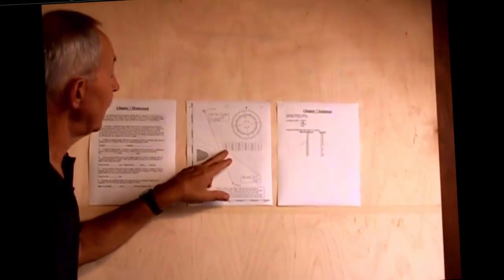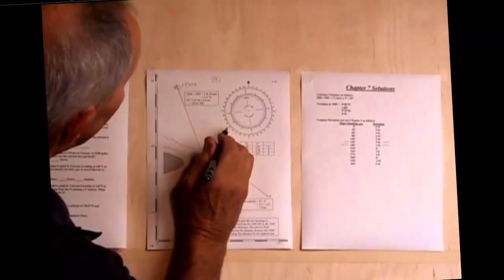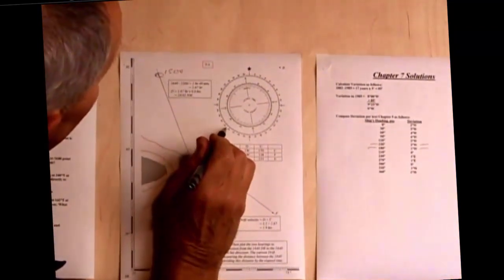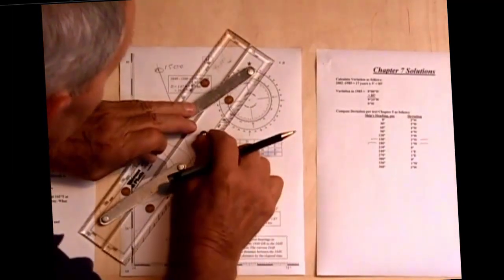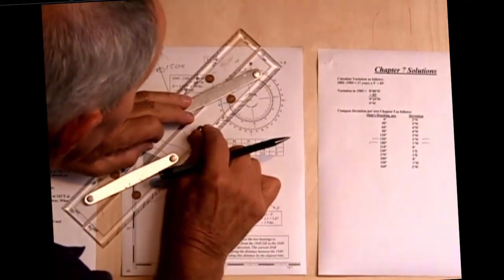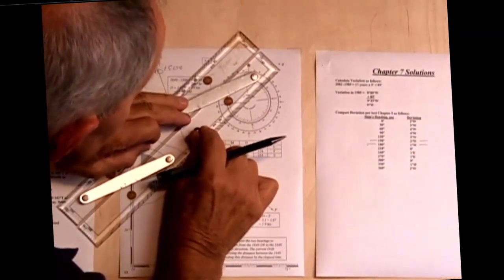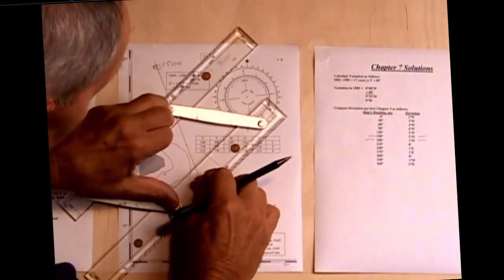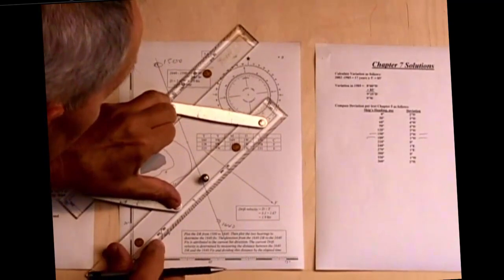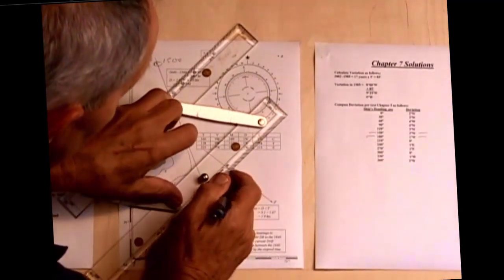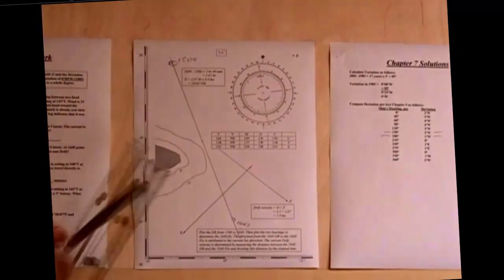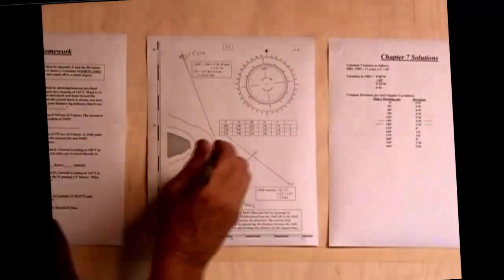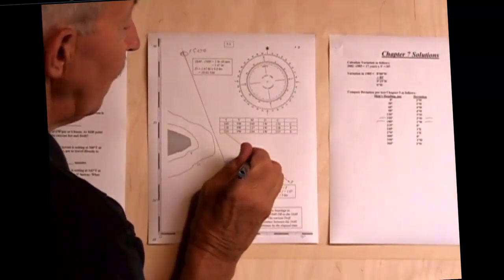The next bearing is 225 on point E. I come over here and find 225, which is right there. I put my parallel rules in, run that down until I'm at point E. Where the two of those cross is my fix, and I'm going to mark that fix with 1640.